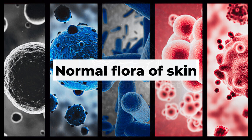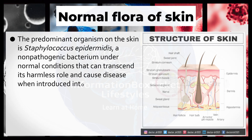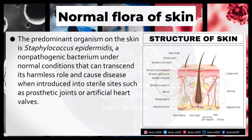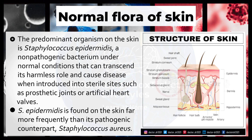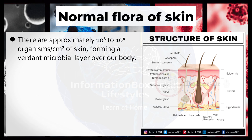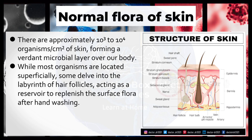Normal flora of skin. The predominant organism on the skin is Staphylococcus epidermidis, a non-pathogenic bacterium under normal conditions that can transcend its harmless role and cause disease when introduced into sterile sites, such as prosthetic joints or artificial heart valves. Staphylococcus epidermidis is found on the skin far more frequently than its pathogenic counterpart, Staphylococcus aureus. There are approximately 10³ to 10⁴ organisms per square centimeter of skin. While most organisms are located superficially, some delve into hair follicles, acting as a reservoir to replenish the surface flora after hand-washing.